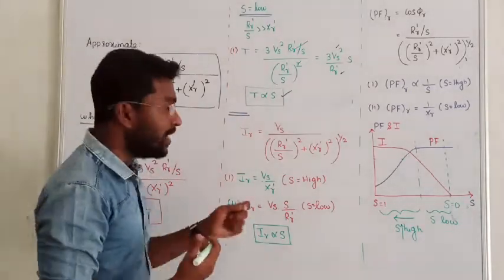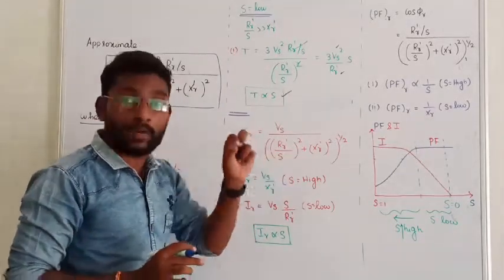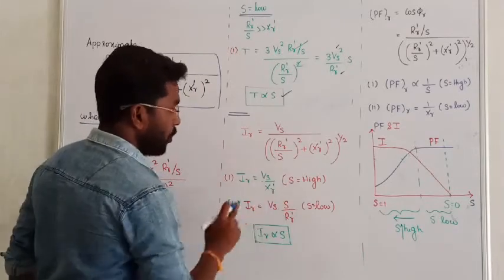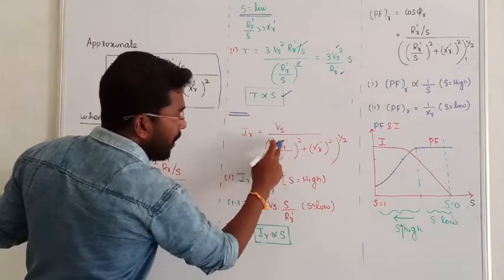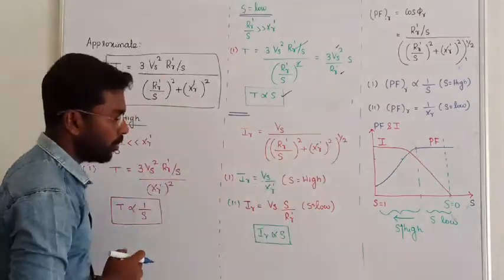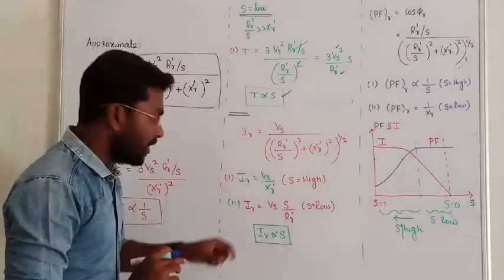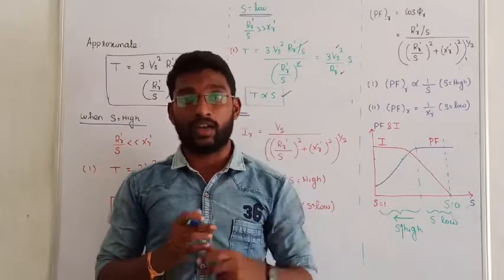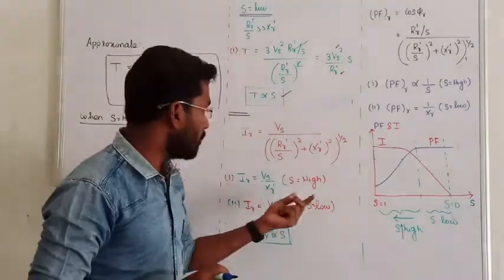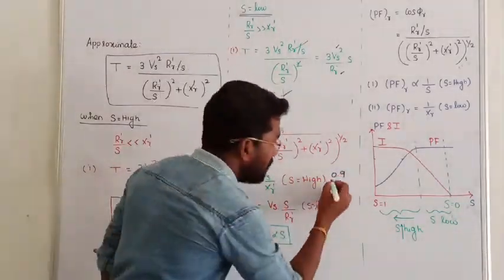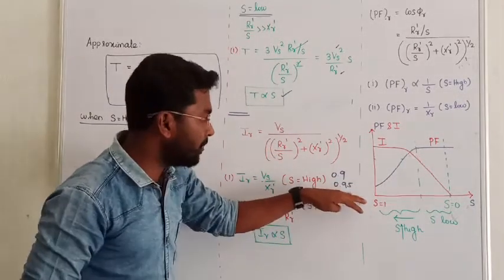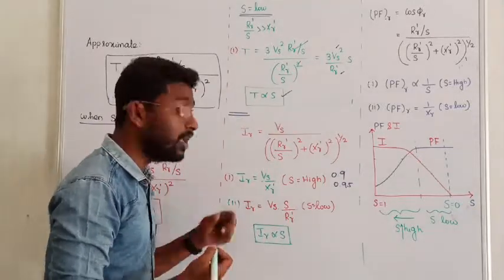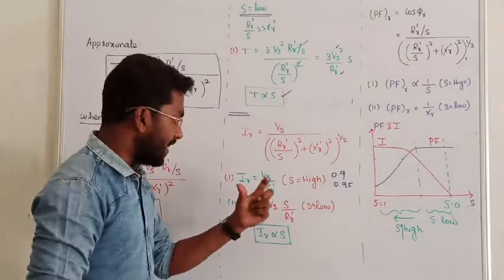This is the approximate rotor current equation — the circuit is simplified by neglecting the effect of stator impedance. The operator is zero. This is the approximate current equation. Case number 1: when slip is high, we are neglecting RR' by S compared to XR. So with a slip of say 0.9, almost close to 1, the changes in rotor current are negligible — we can neglect the effect of changes in rotor current. When the slip is high, rotor current is constant; it does not vary with respect to slip.